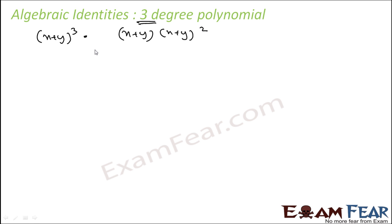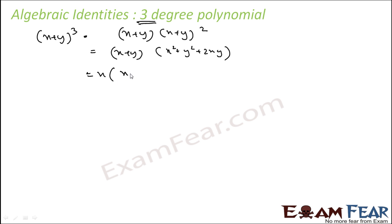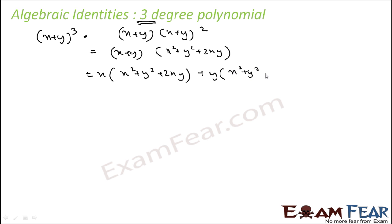Let's break this (x + y) whole square. This becomes x² + y² + 2xy. So this becomes x into (x² + y² + 2xy) plus y into (x² + y² + 2xy).